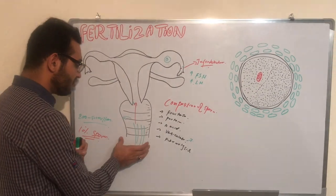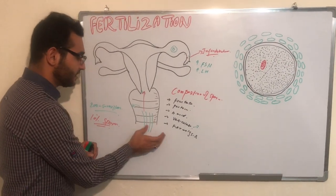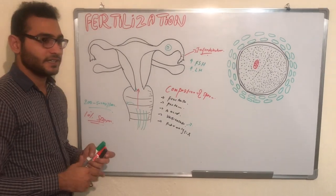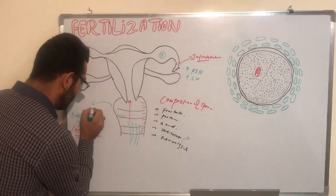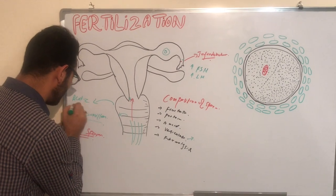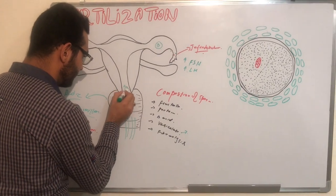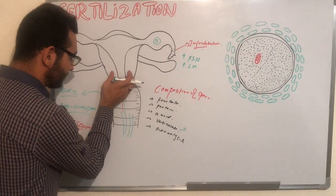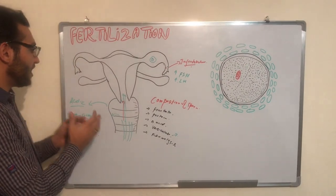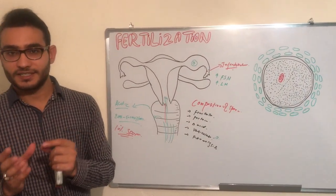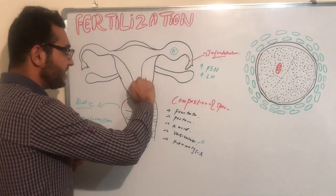The sperm is motile in nature, but movement in the vagina is less because the vagina is an acidic medium. When the sperm moves upward and reaches the uterus, it becomes more motile because the uterus is alkaline in nature. The sperm then continues toward the fallopian tube.